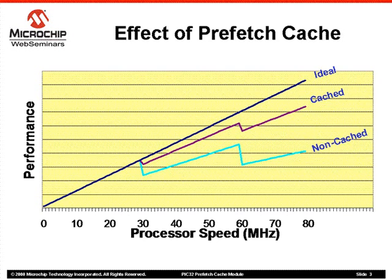The cached line shows the performance when the Prefetch Cache Module is enabled. As you can see, the performance with the Prefetch Cache Module enabled is significantly better than the non-cached scenario. The exact performance improvement depends on the code organization of the application.